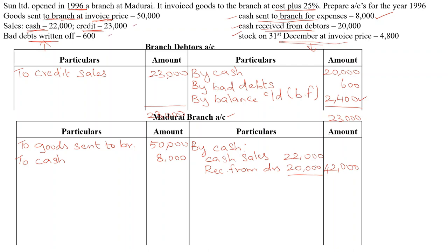Before recording closing balances, we calculate stock reserve. The profit is cost plus 25%, so we assume cost equals 100 and profit is 25, giving a selling price of 125. Since the stock values are at invoice price — which is selling price — the denominator is 125. The numerator is 25 (the profit portion). We first calculate closing stock reserve, which is recorded on the debit side.